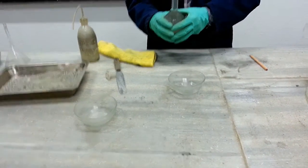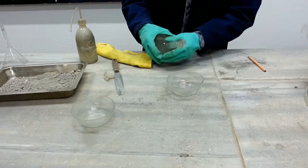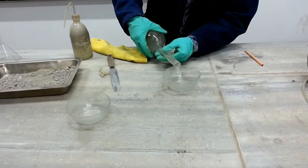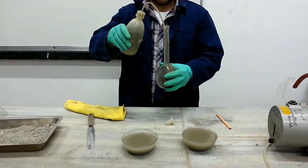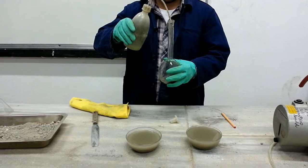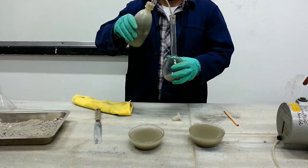After, we pour the soil and water into an evaporating dish. Then, we use a plastic squeeze bottle and wash the inside of the flask. We should make sure that no soil is left inside.